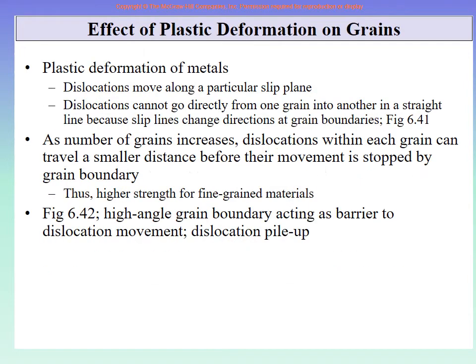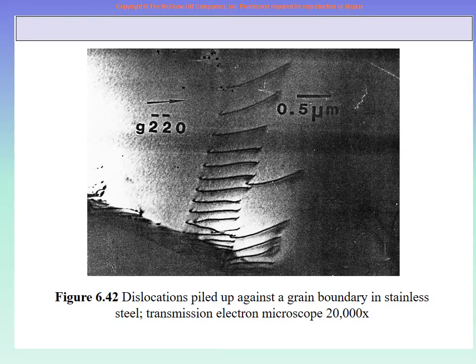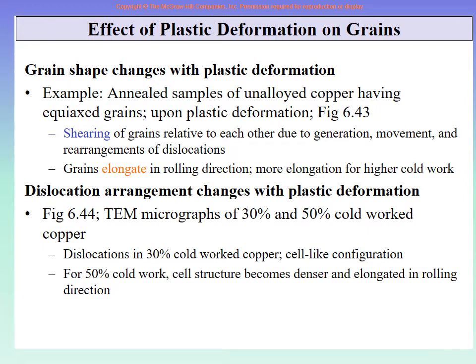We then discussed the effect of plastic deformation on grains. We showed a micrograph — a photograph at the microscopic level — of the grains and the dislocation pile-up, which will be covered in more detail in chapter three on crystal structure and chapter four on defects. The two major effects of plastic deformation on grains are that grain shape changes and the dislocation arrangement changes.